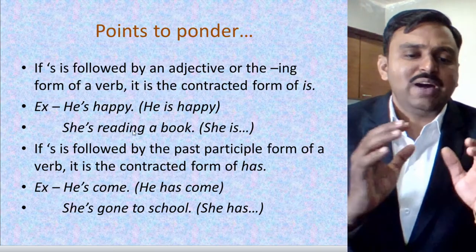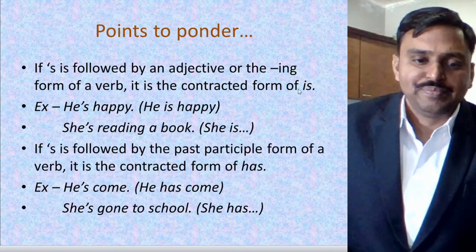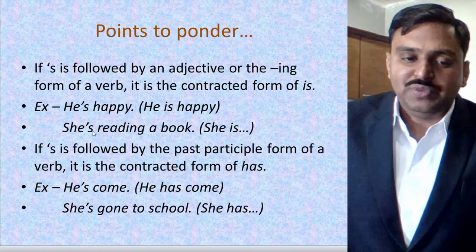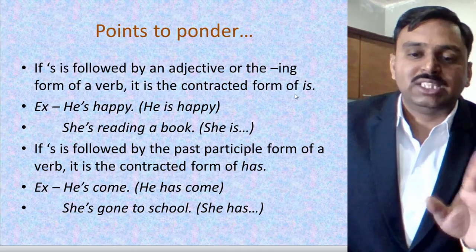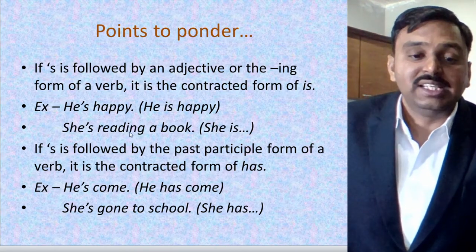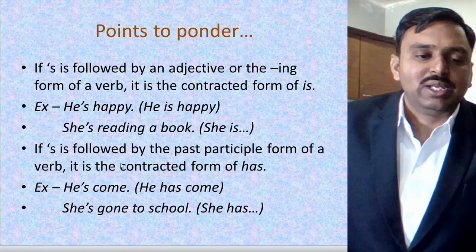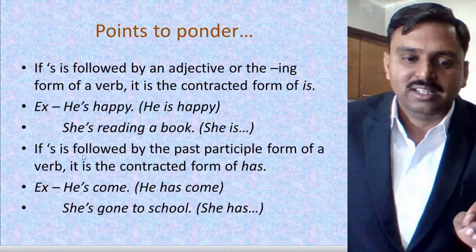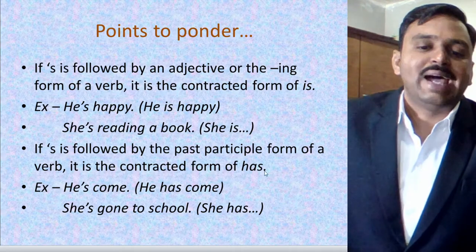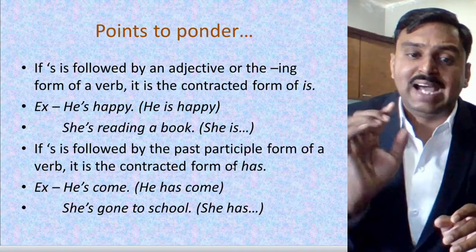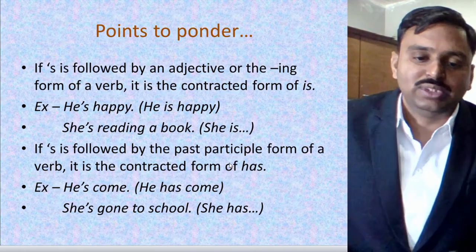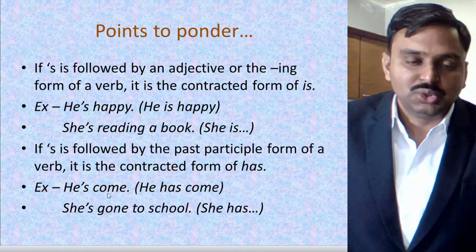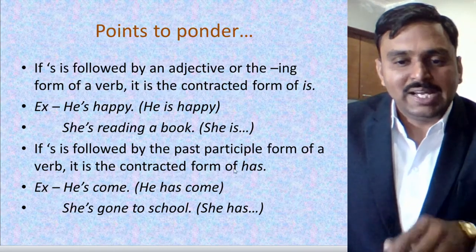So 'she is reading' is an example of present continuous tense. You may have confusion between 'has' and 'is.' When there is an adjective or an '-ing' verb after the apostrophe 's,' it means 'is.' The second rule: if apostrophe 's' is followed by the past participle — V3 form — of a verb, it is the contracted form of 'has.' I cannot say 'he has happy' or 'he is come' — those sentences are wrong. Has comes with V3 form.